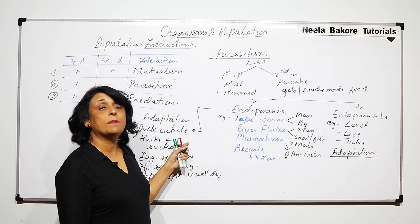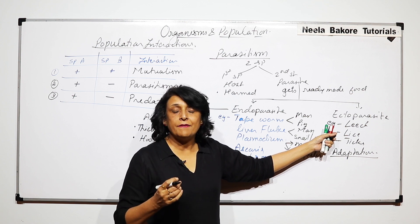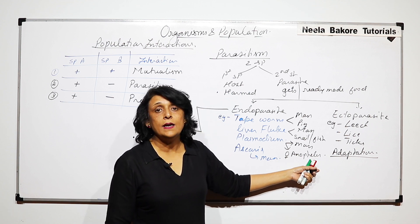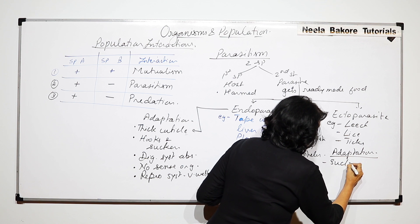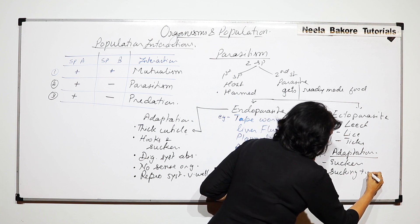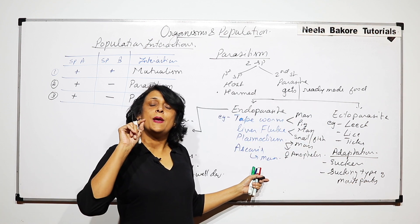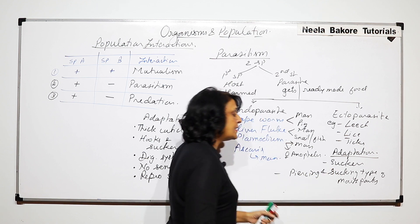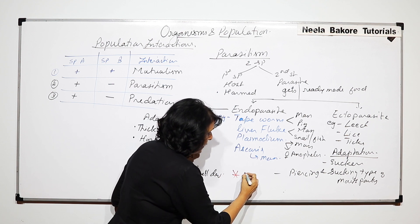Adaptations of ectoparasites are different from those of endoparasites. Since they are outside the host body, they do need sense organs and do not require a thick cuticle. Their key adaptations for sucking blood include suckers — for example, leeches have suckers — or piercing and sucking type of mouth parts, which allow them to puncture the skin of the host.